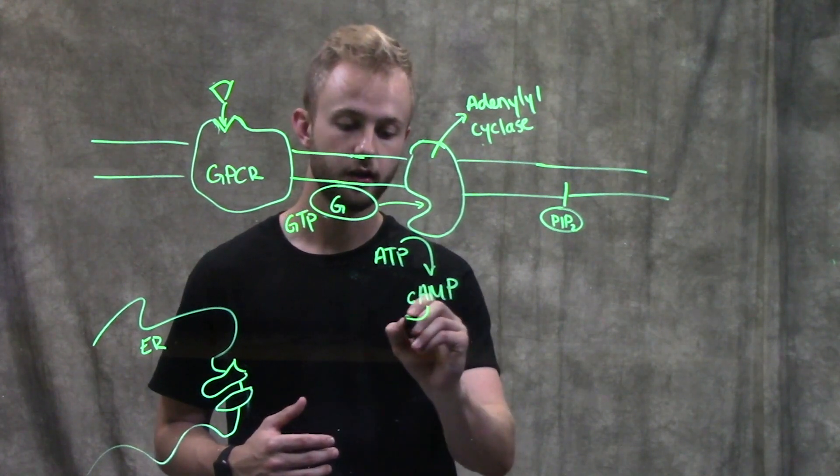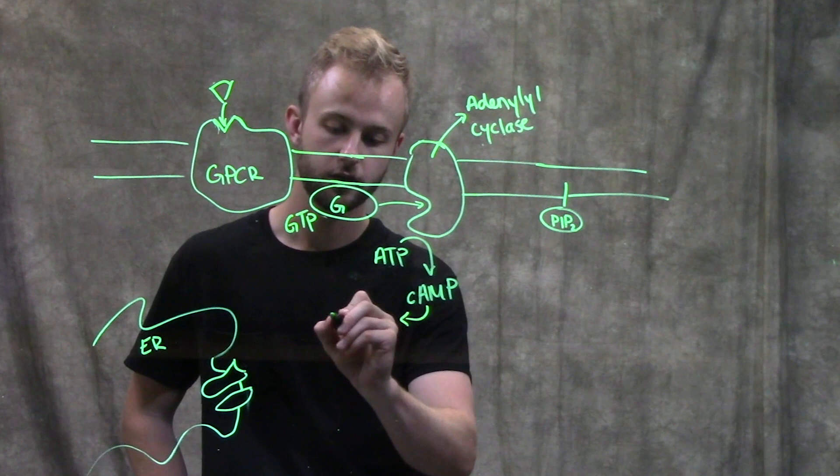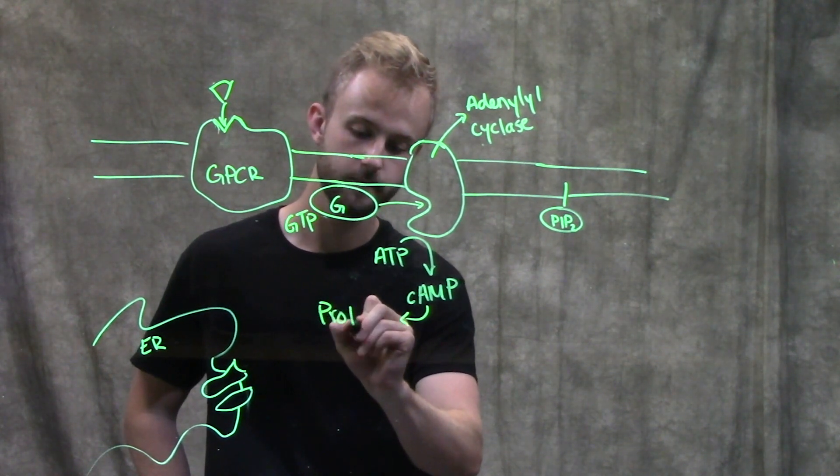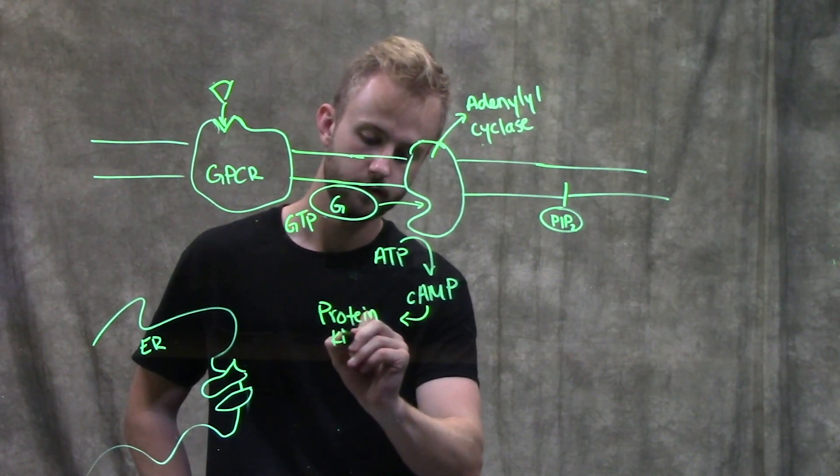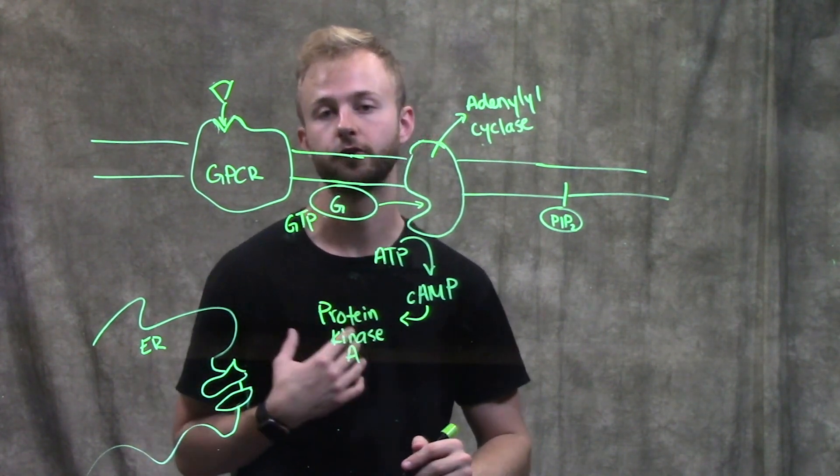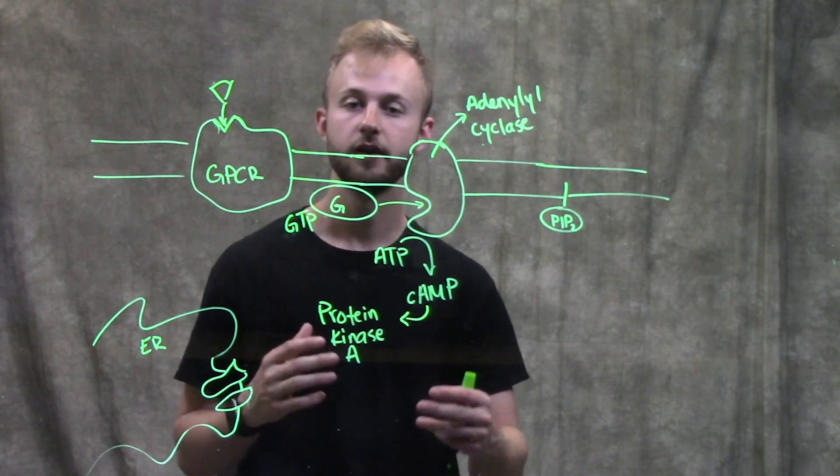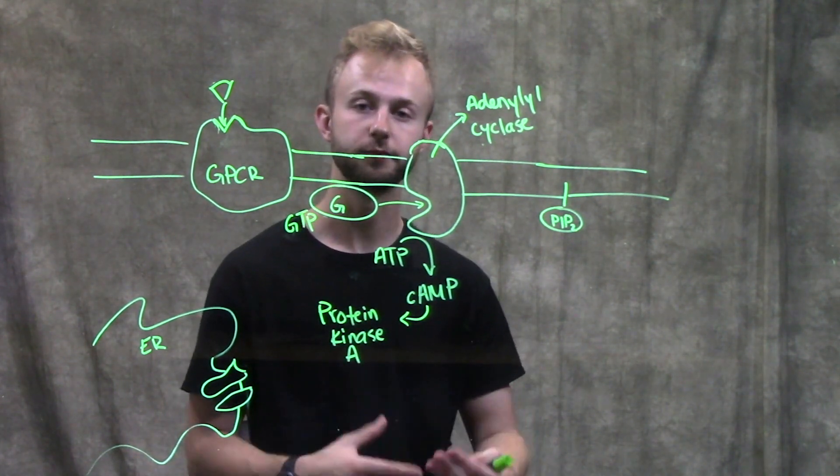Cyclic AMP will then often go on to activate a serine threonine kinase called protein kinase A, which can then take place in a phosphorylation cascade and phosphorylate other kinases or other enzymes to eventually bring about the cellular response.